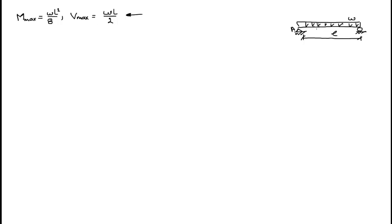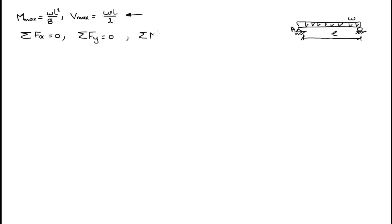We want to find the shear force or bending moment at a certain point along the length of the beam, like in the middle, at distance x, or at the support reactions. We're finding all of these symbolically — L is any length and W is any arbitrary uniformly distributed load. The first thing to do is apply the equilibrium equations: ΣFx = 0, ΣFy = 0, and ΣM about a certain point = 0.